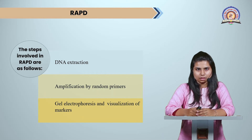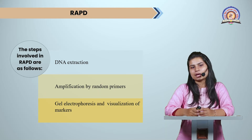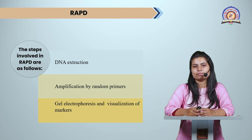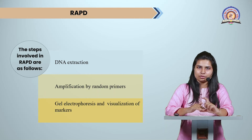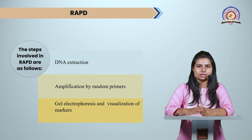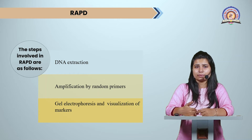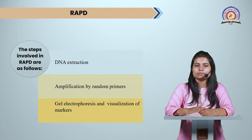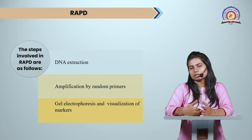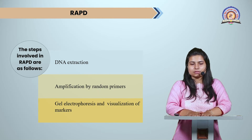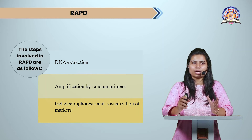There are three steps in RAPD. First is DNA extraction from the particular source. Second is amplification by random primers — you add the DNA sample into a vial, add restriction enzymes, add forward and reverse primers as in PCR, then run 40 to 45 PCR cycles. Once the PCR is complete, the third step is gel electrophoresis to visualize the DNA. These are the three basic steps of the RAPD method, with PCR being the most important step.